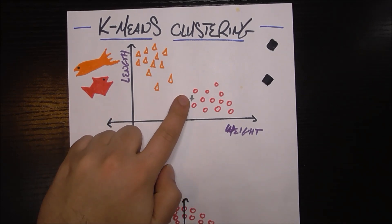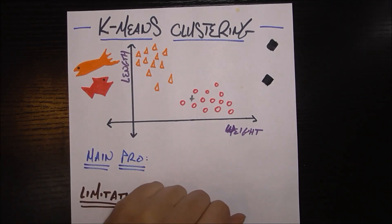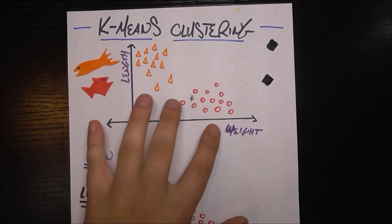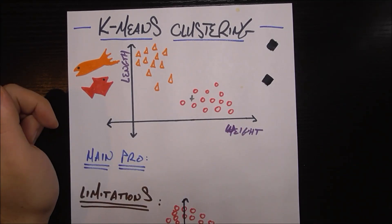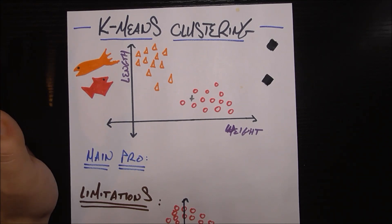So pretend now you've got this gray X, a mystery fish, with this following weight and length, and you're trying to figure out, should I assign it as tuna or salmon? Naturally, we would say tuna because it's in this area that tuna are in, but how does k-means clustering deal with this? The best way to demonstrate this algorithm is literally just to show it in action.